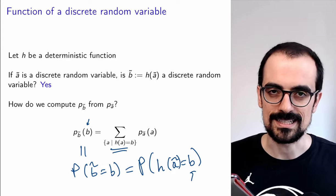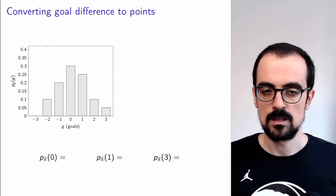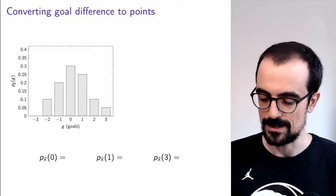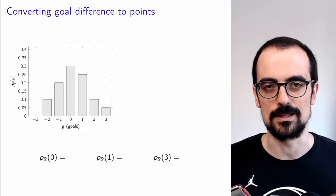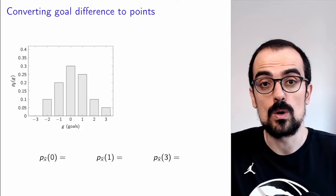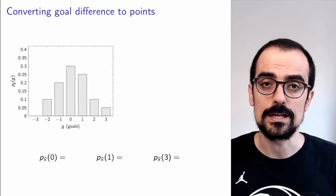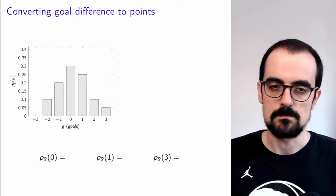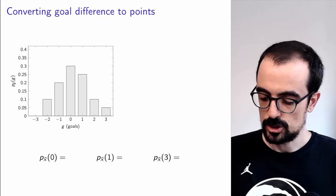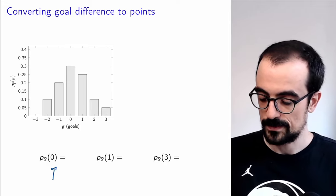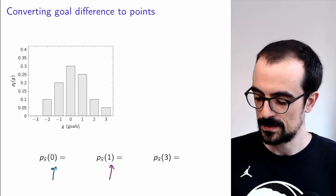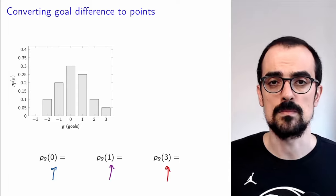Let's take a look at an example to fix ideas. Imagine that we know the PMF of G, which is the goal differential that we already used as an example in our videos on discrete random variables and PMFs. Now we want to derive the PMF of the points that will be gained by a soccer team given that goal differential. The points can be equal to 0 if the team loses, 1 if the team ties, and 3 if the team wins.